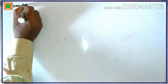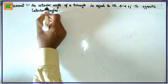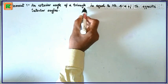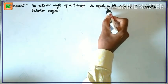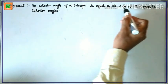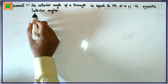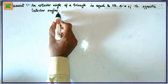Statement: An exterior angle of a triangle is equal to the sum of the opposite interior angles.